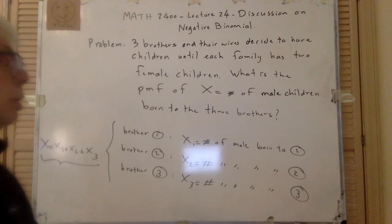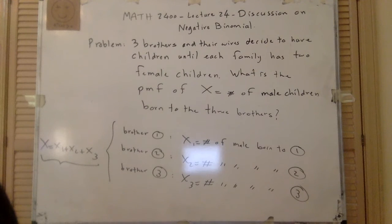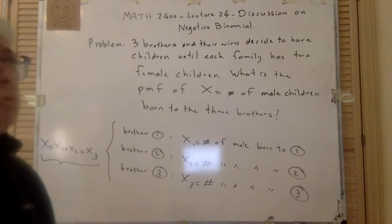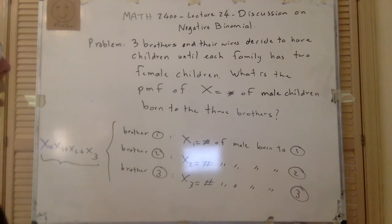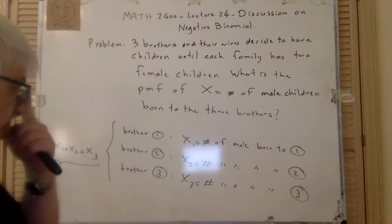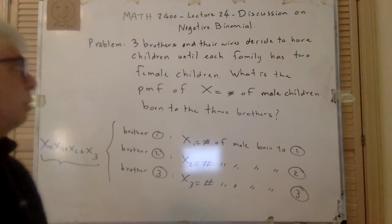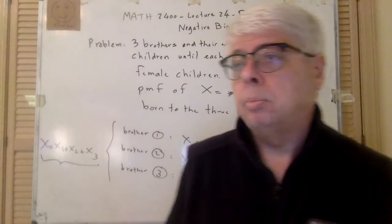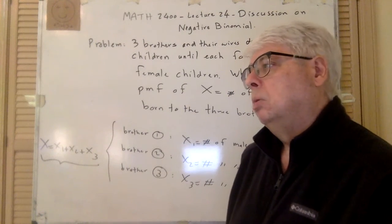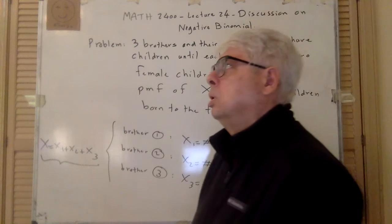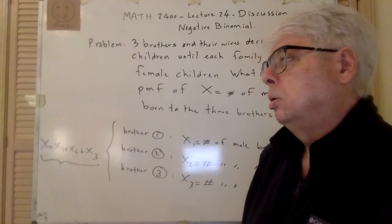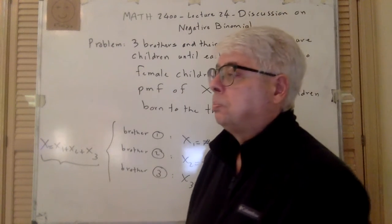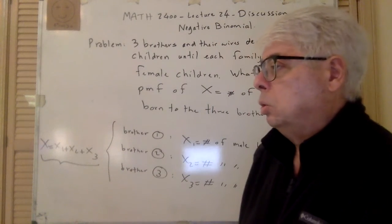And there are others that when you add them, assuming some kind of independence, you will get a random variable from the same family. This is one of them — when you add some negative binomials, you will get another negative binomial. Now, there are different ways to attack a problem like this. I will do it in a more intuitive way today. But the more rigorous way is to prove it using what we call a moment-generating function, because we are dealing with discrete random variables.